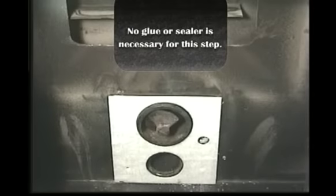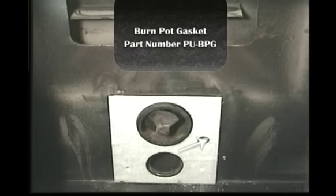Install the new burn pot gasket by placing the large hole over the auger tube and the small hole directly over the igniter element.